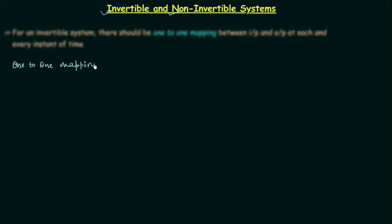In case of one-to-one mapping, for each and every possible unique value of input the output will be unique. In other words, the output will not be the same for two or more distinct possible values of input. To make you understand this, I will take one example.